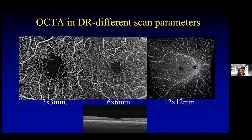Here's another diabetic eye looking at the different scan parameters. On the left, we see foveal details in the three by three millimeter scan. As we zoom out in the six by six millimeter scan, we can still see the foveal avascular zone, a small microaneurysm, regions of capillary dropout, and an irregular vascular loop. In the 12 by 12 millimeter scan, we have even more detail, and this is all accompanied with a structural OCT.